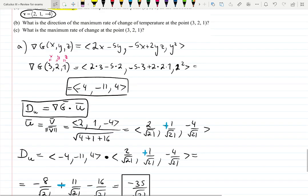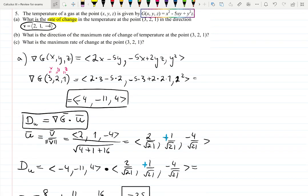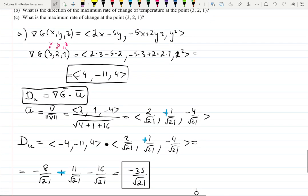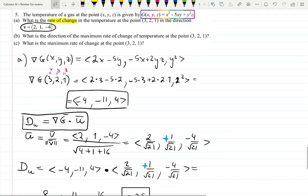Part (a) asks us to find the rate of change in the temperature at the given point in the given direction, and you can see the rate of change is negative, so the temperature is decreasing.